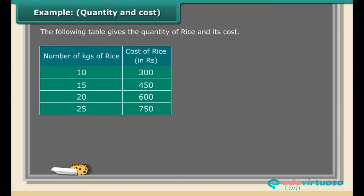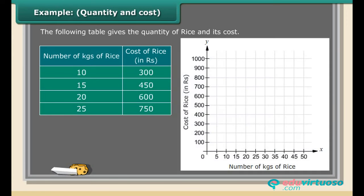Example: Quantity and cost. The following table gives the quantity of rice and its cost. Plot a graph to show the data. 1. Mark the number of kgs of rice in x-axis, horizontal axis, with 1 unit is equal to 5 kgs. 2. Mark the cost of rice in y-axis, vertical axis, with 1 unit is equal to rupees 100.